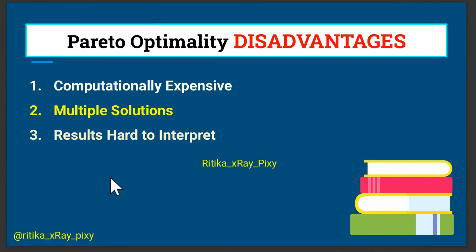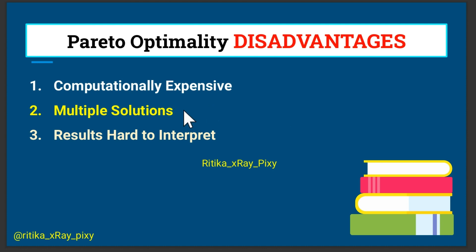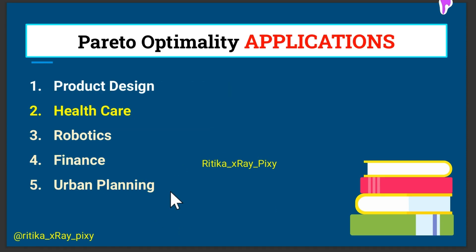There are also disadvantages. First, complexity — Pareto optimal solutions can be computationally expensive, especially in problems with many objectives. Second, it does not provide a single best solution, but rather a set of trade-offs, which can make decision-making more difficult. And the results can be hard to interpret, especially in problems with many conflicting objectives.